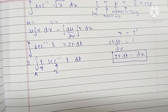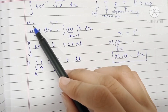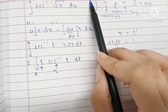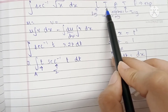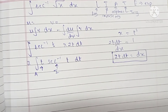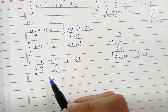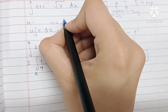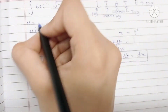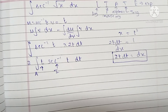The LIATE rule gives us an order of preference. Since inverse trigonometric comes before algebraic, sec⁻¹(t) is kept as the u term and t, the algebraic term, is kept as the v term. Now we're going to start applying the formula.